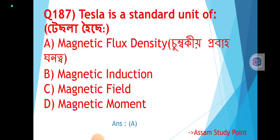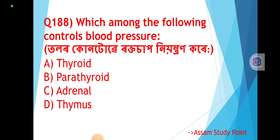Question 188: Which among the following controls blood pressure? The correct answer is Option C: Adrenal. Adrenal gronthiya kee kore? — What does the adrenal gland do? Rakta sab nyuhantan kore — it controls blood pressure.